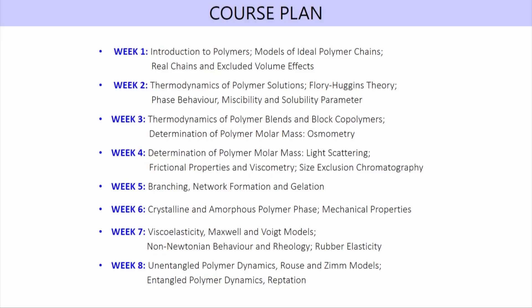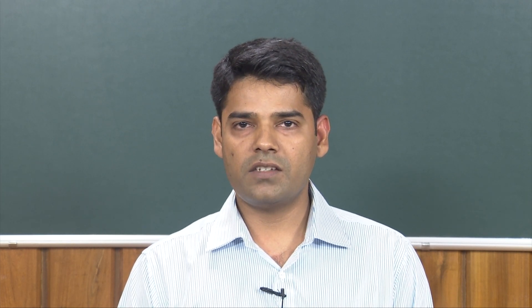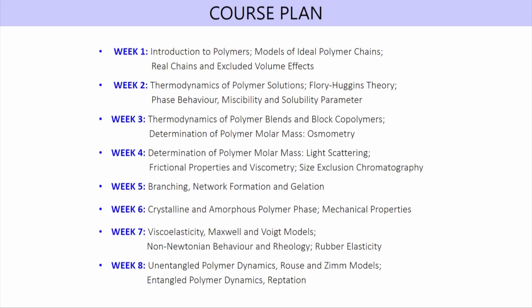We will next focus on the determination of molar mass of polymeric materials. Polymeric materials have different types of molar masses — basically average molar masses. There are different ways in which such averages can be defined and there are different experimental techniques that can measure different types of such average molar masses. We will be focusing upon three important techniques: osmometry, light scattering, and viscometry. We will also briefly discuss the measurement of polymer molar mass distribution through the use of gel permeation chromatography.